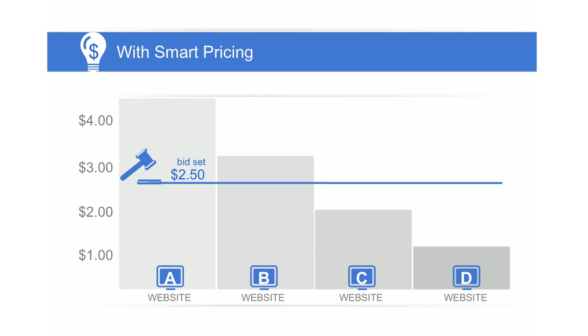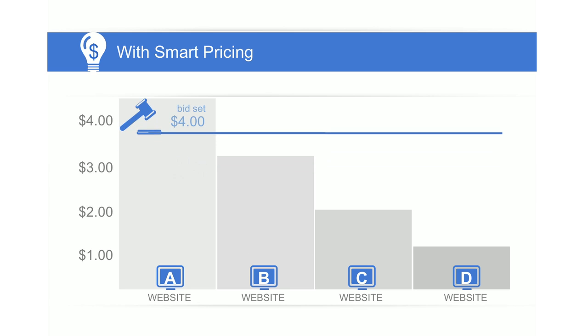What smart pricing does is allow our system to auto-adjust the advertiser's bid across the sites according to the likelihood the click will deliver actionable business results. An advertiser can then confidently bid the maximum they're willing to pay across all sites and leave it to our system to take care of the rest. So in this example, the advertiser can bid $4 across all four sites, and our system will automatically adjust the bids for each of the other sites to $3, $2, and $1 respectively.